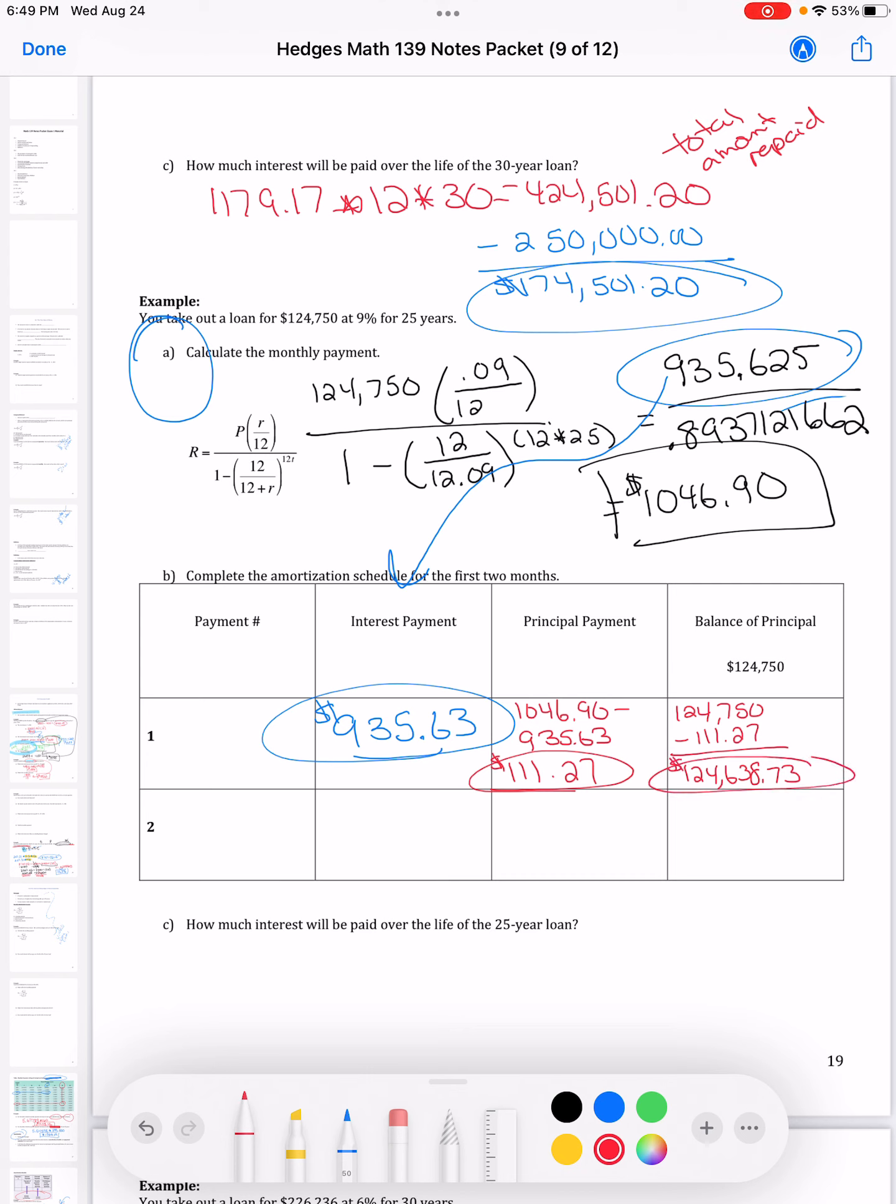Now, very similar for the next line. I do have to recalculate everything. So I'm going to do that real quick. So now I don't owe $124,750 right now, a little bit less. So I'm going to have a new numerator.